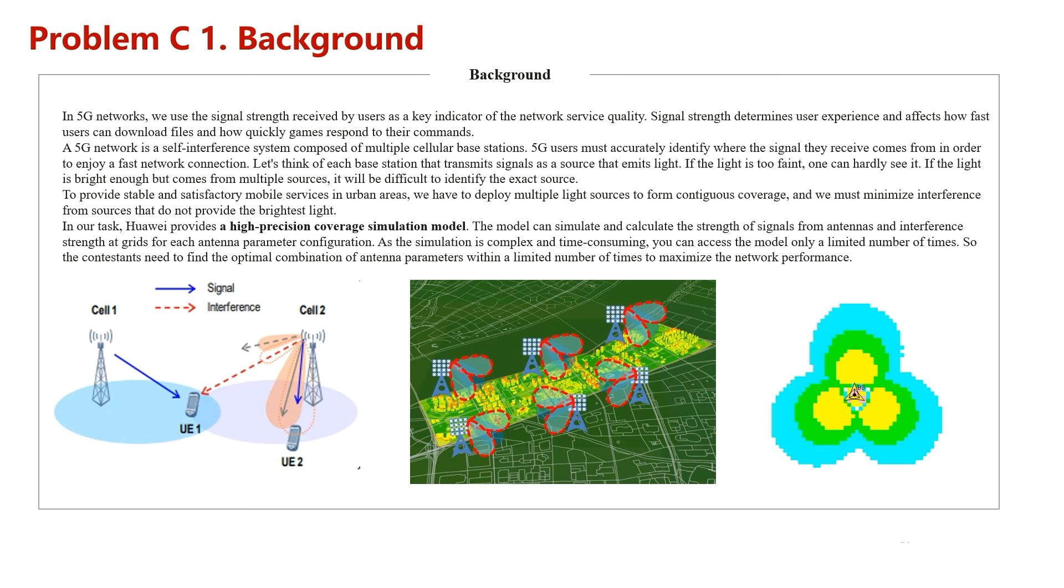The figure in the middle shows how we guarantee the signal in an area. We will set many antennas around this area or inside this area. The figure on the right shows the base station with three antennas, and the shape of signals look like that.